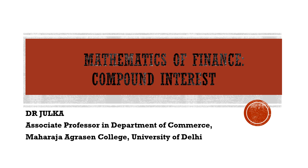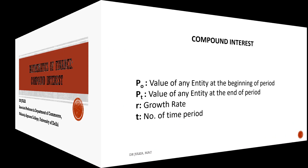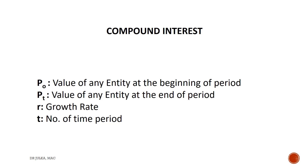Hi everyone, today we talk about compound interest. Compound interest or compounding interest is an interest calculated on the initial principal, which also includes all the accumulated interest of the previous period of a loan or a deposit. In other words, we can say that it is interest on interest.